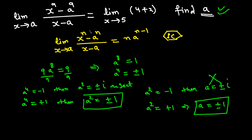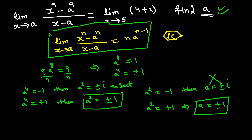They can change the power and the right-hand side to create different variations of this problem, but the key formula to remember is the limit theorem: limit as x approaches a of (xⁿ - aⁿ)/(x - a) = n·aⁿ⁻¹. Thanks for watching — please share and subscribe. I'll make more videos on left-hand and right-hand limits and trigonometric limits.